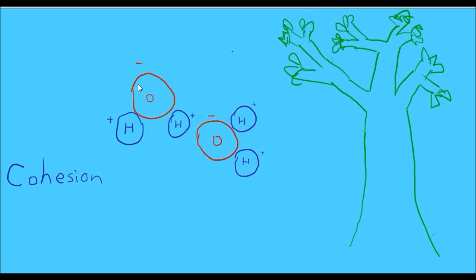The weak positive and negative charges on either end of a water molecule allow water to have certain properties. The most important one is called cohesion — that's the ability of something to stick to itself. So one water molecule will stick to another through the difference in their positive and negative charges.